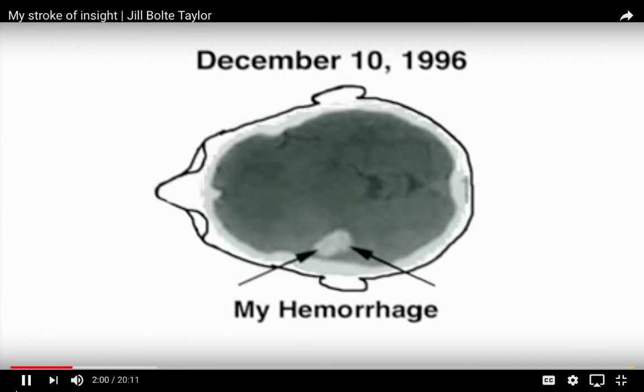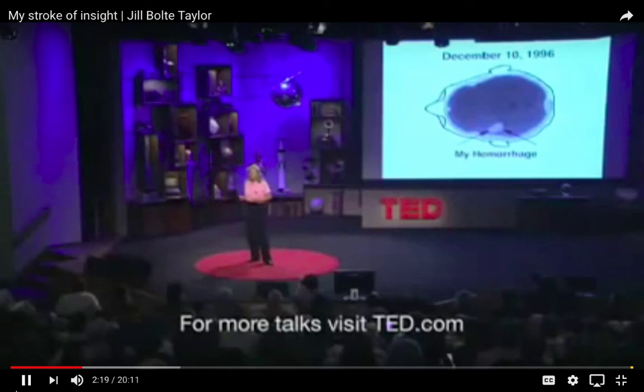On the morning of December 10, 1996, I woke up to discover that I had a brain disorder of my own. A blood vessel exploded in the left half of my brain. And in the course of four hours, I watched my brain completely deteriorate in its ability to process all information. On the morning of the hemorrhage, I could not walk, talk, read, write, or recall any of my life. I essentially became an infant in a woman's body.